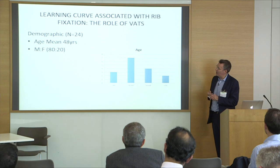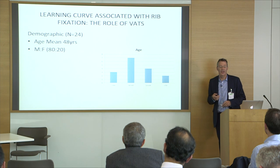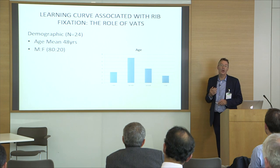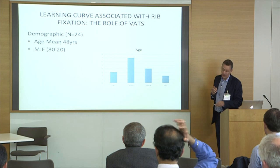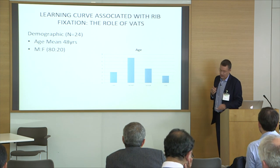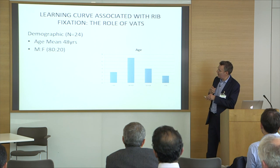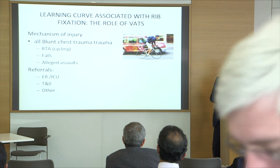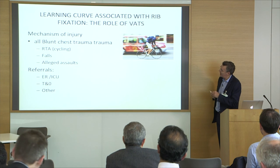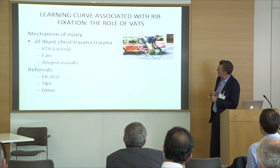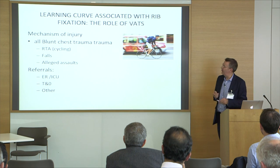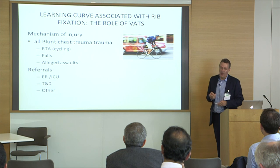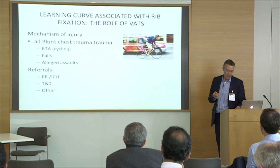Looking at our demographics — we're typically operating in a blunt chest trauma age group, with the usual male-to-female ratio. The type of injury seen within our Greater London practice is predominantly road traffic accidents. Falls are very common, as are alleged assaults, which is a common occurrence around where we work in Tooting.